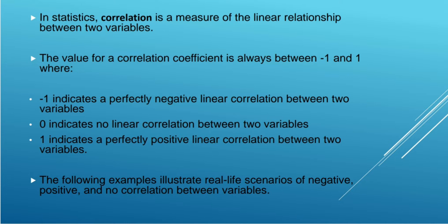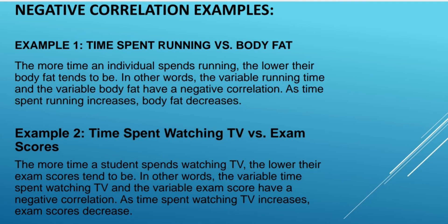The following examples illustrate real life scenarios of negative, positive and no correlation between two variables. Negative correlation example 1: time spent running versus body fat. The more time an individual spends running, the lower their body fat tends to be. The variable running time and variable body fat have a negative correlation — as time spent running increases, body fat decreases.